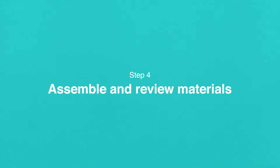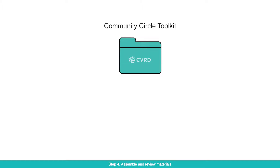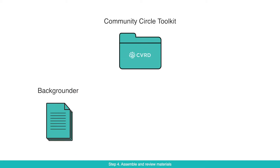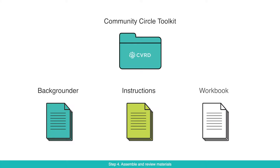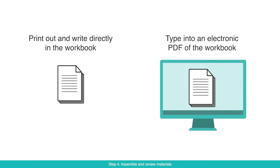Step 4: Assemble and review materials. Head to our website and download a community circle toolkit. Inside the toolkit, you'll find a backgrounder on each goal in the Modernized Official Community Plan, instructions for the facilitator, and a workbook to record your group's discussion. You can print out your workbook and write directly in it, or you can type your notes into an electronic PDF version.